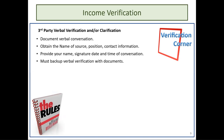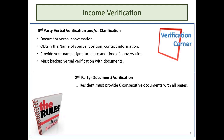For third-party verbal verification, document the verbal conversation on your forms — obtain the name, source, position, and contact information. Provide your name, signature, date, and time of conversation. You must back up verbal verification with a document such as a pay stub or W-2. Second-party verification is the next step if you're unable to get third-party written. The document must provide six consecutive documents with all pages — so if using pay stubs, you need six consecutive pay stubs.